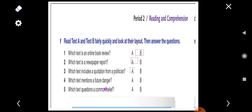Number four. Which text mentions a future danger? Which of the passages expresses or mentions future dangers? Yes, it's A, because we're talking about a politician. So he will talk about the future.